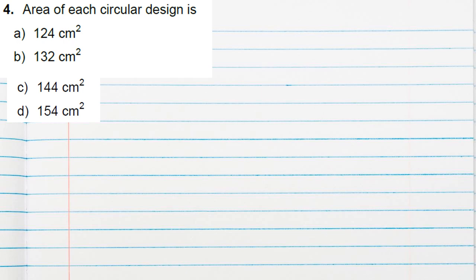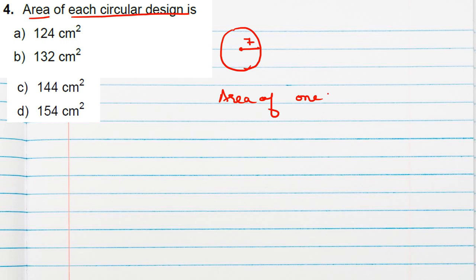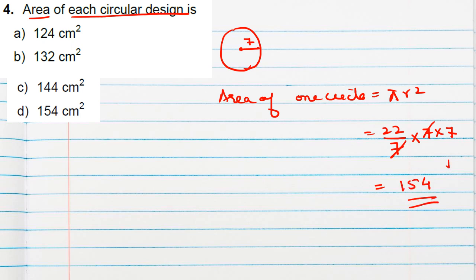Question number 4 is also based on Design 2: find the area of each circular design. There are nine circles, each with radius 7 cm. Area of one circle = πr² = (22/7) × 7 × 7. The 7 cancels, giving 22 × 7 = 154 cm². So the area of each circle is 154 cm², which is option D.